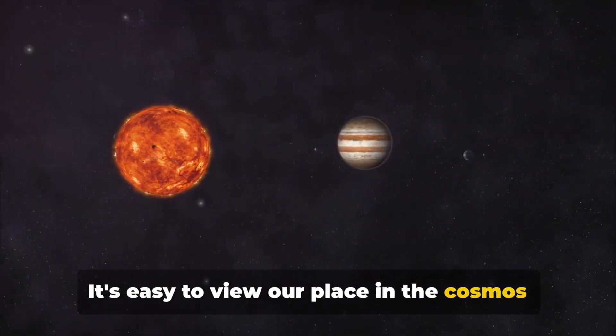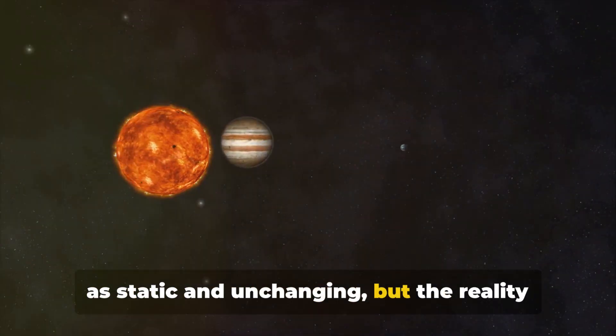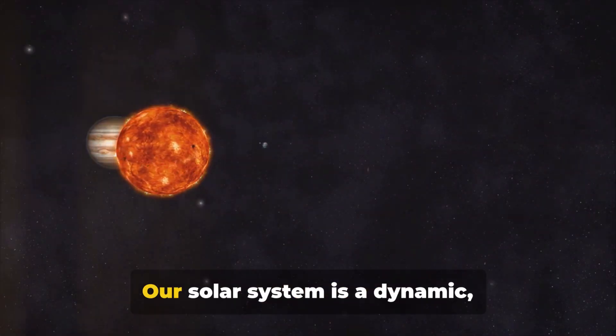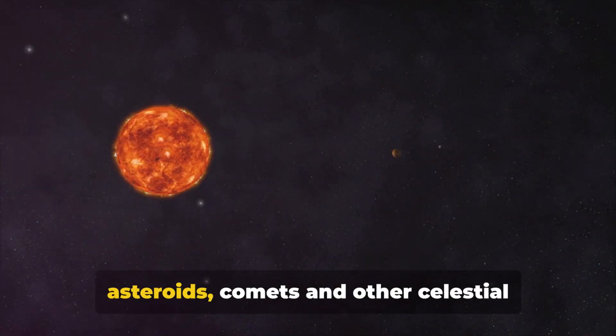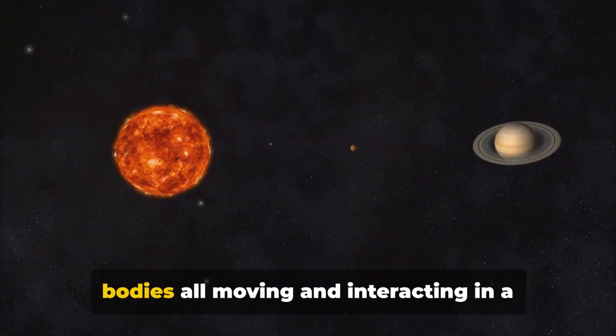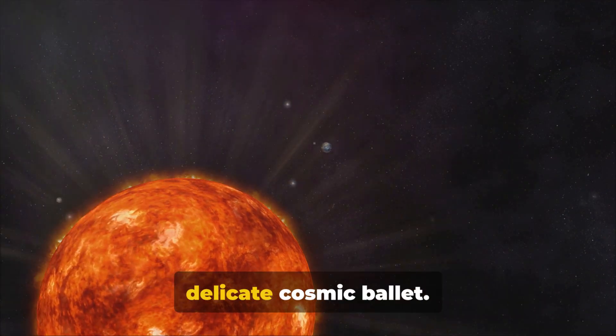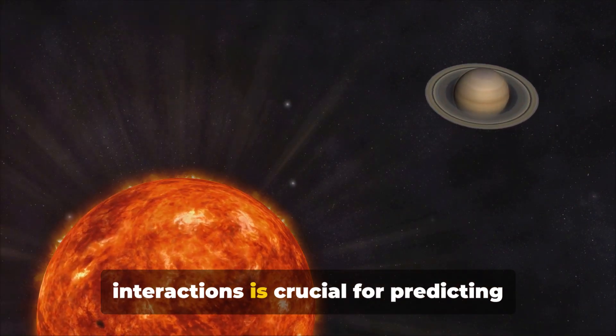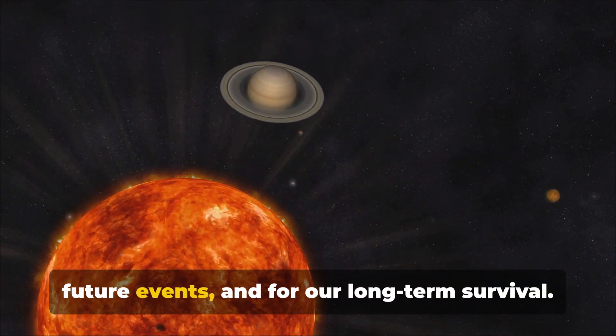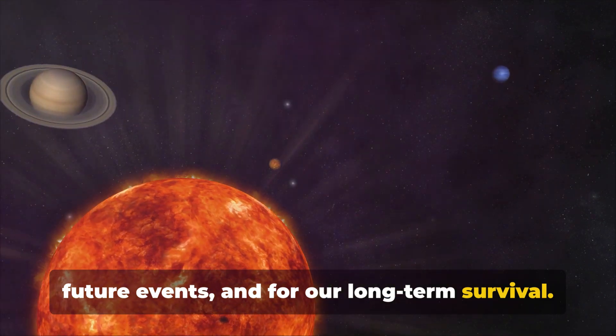It's easy to view our place in the cosmos as static and unchanging, but the reality is far from it. Our solar system is a dynamic, ever-evolving system with planets, asteroids, comets, and other celestial bodies all moving and interacting in a delicate cosmic ballet. Understanding these movements and interactions is crucial for predicting future events and for our long-term survival.